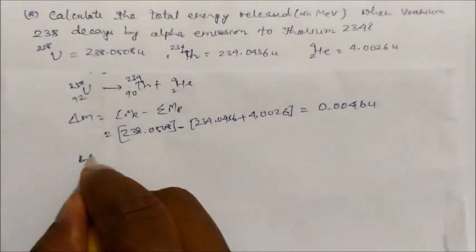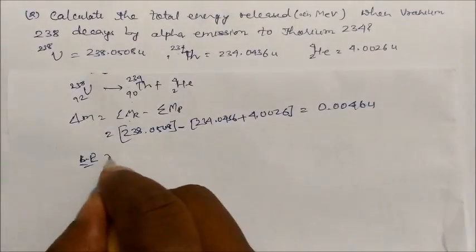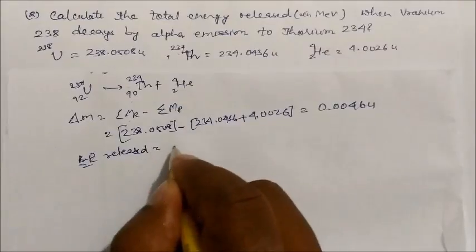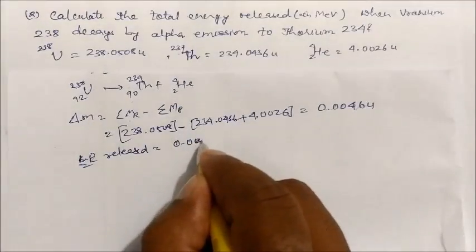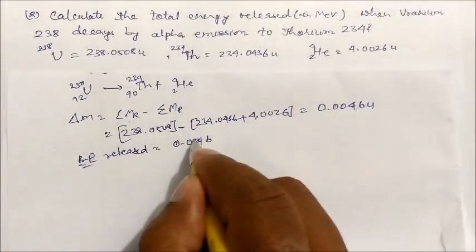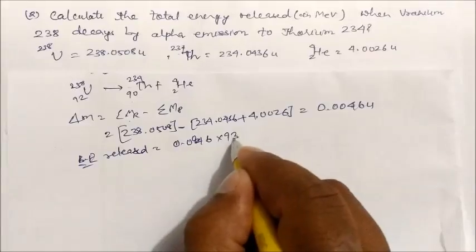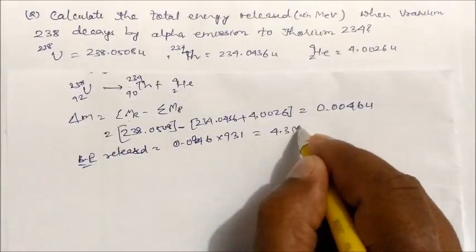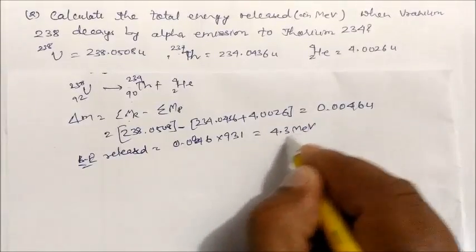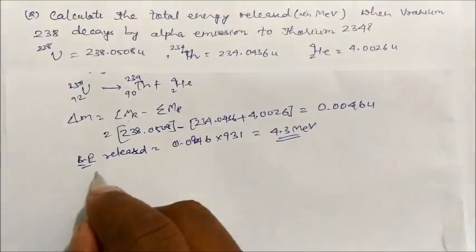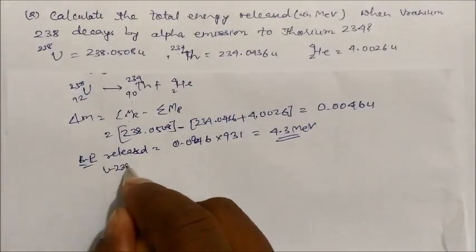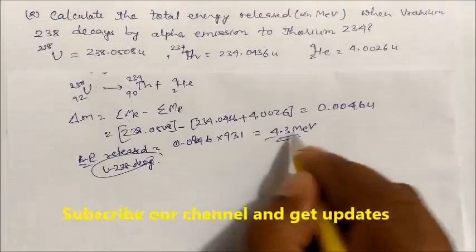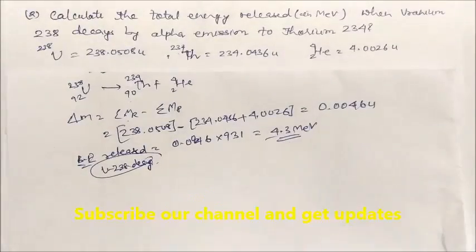The energy released equals 0.0046 u × 931 MeV/u. On solving you will get 4.3 MeV. So this is how much energy is released when uranium-238 decays by alpha emission.